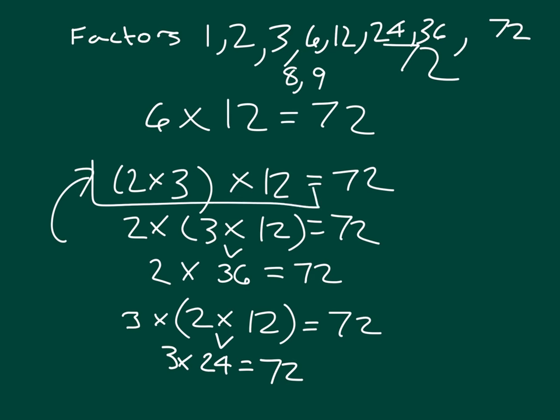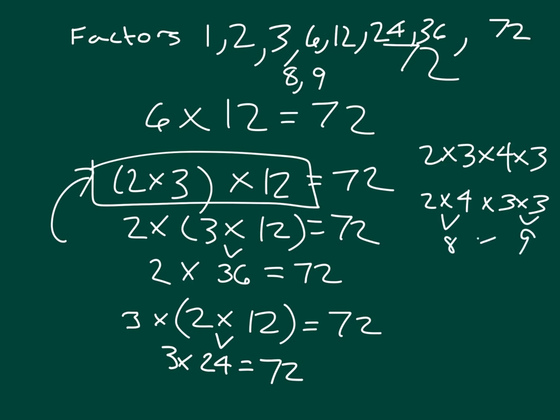We could have gotten this from here if we had gone 2 times 3 times—um, let's see—4 times 3. 4 times 3 being 12, and 2 times 3 being 6. And then we just move these factors around so that we get 2 times 4 being 8, and 3 times 3 being 9. So that's 8 times 9. I also could have just remembered that 8 times 9 does give us 72.